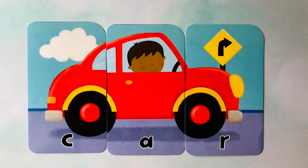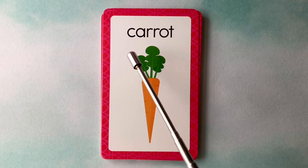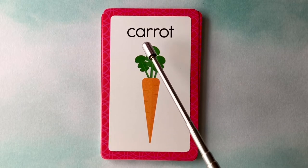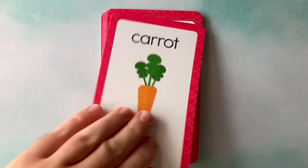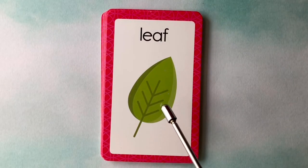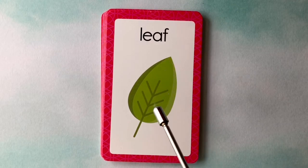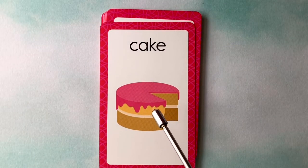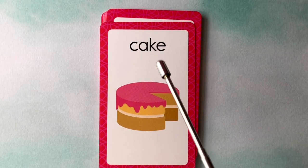You did a fabulous job learning to spell words. Let's learn about words. This is a carrot: C-A-R-R-O-T. Carrot. This is a leaf: L-E-A-F. Leaf. This is a cake: C-A-K-E. Cake.